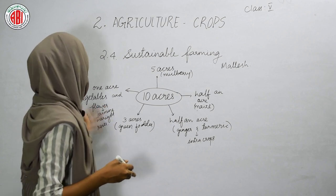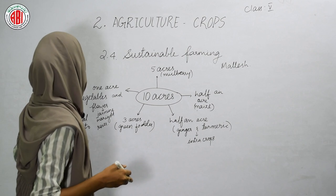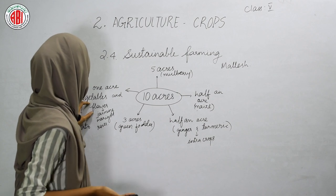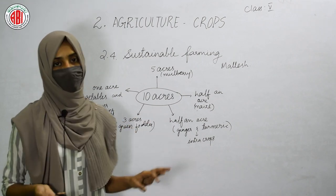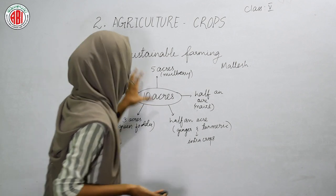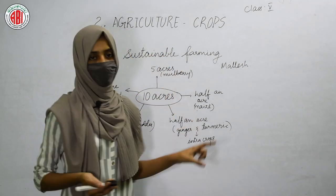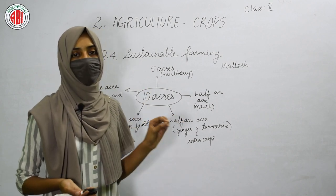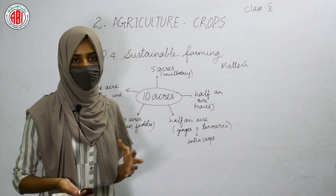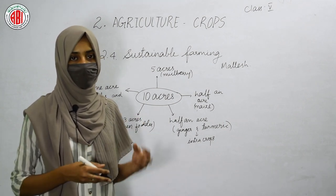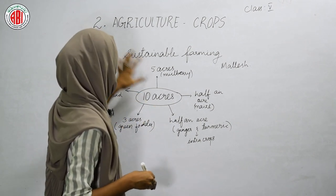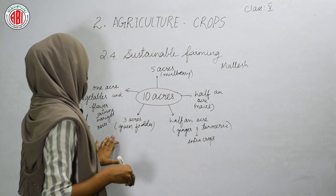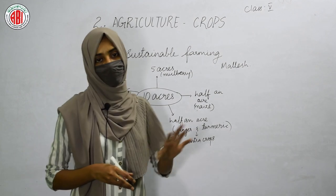The remaining one acre was used to cultivate vegetables like brinjal and tomato, and to grow flowers like jasmine, marigold, and roses. In this way Malish used his ten acres to grow different crops — mulberry, maize, ginger, turmeric, green fodder, flowers, and vegetables — practicing sustainable farming.